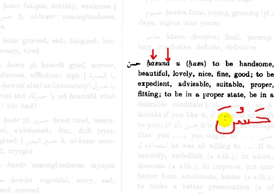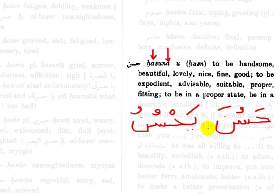Yahsunu means: to be handsome, to be beautiful, lovely, nice, fine, good. You'll notice by these definitions it's intransitive — the verb does not affect an object, so we can't have a passive verb from this. Now remember, if the ayn kalima of the past tense has a dhamma, in most cases it would be intransitive. So keep that as a rule: if you see a verb that has a dhamma in its ayn kalima, then chances are it's going to be intransitive and there's no passive form.